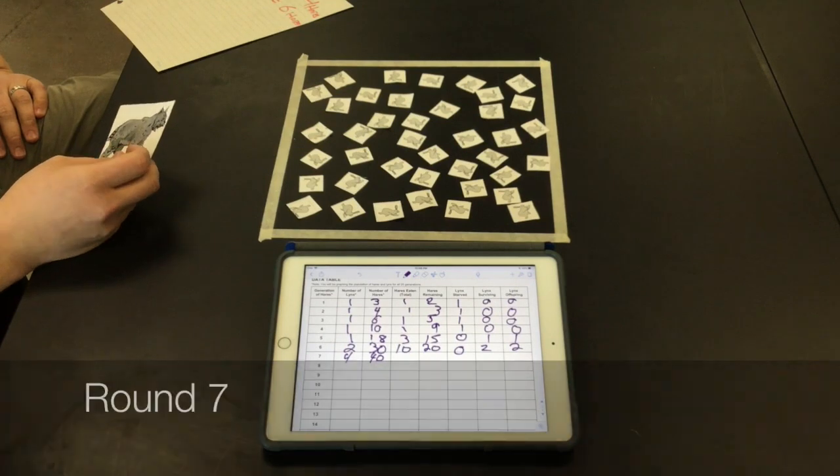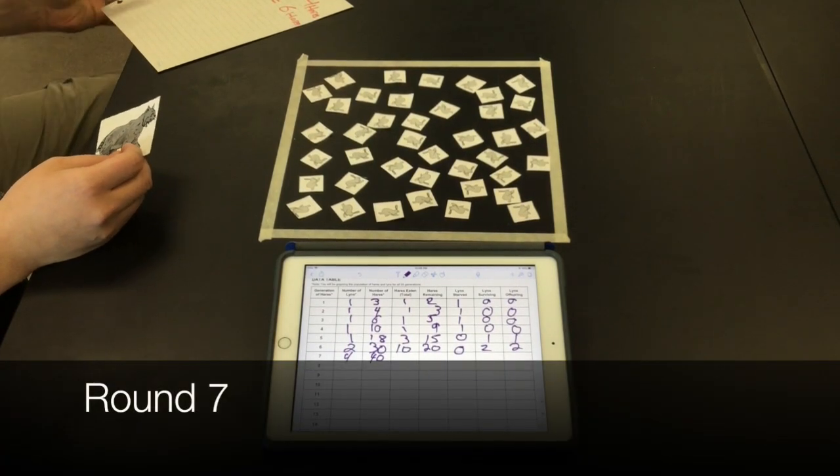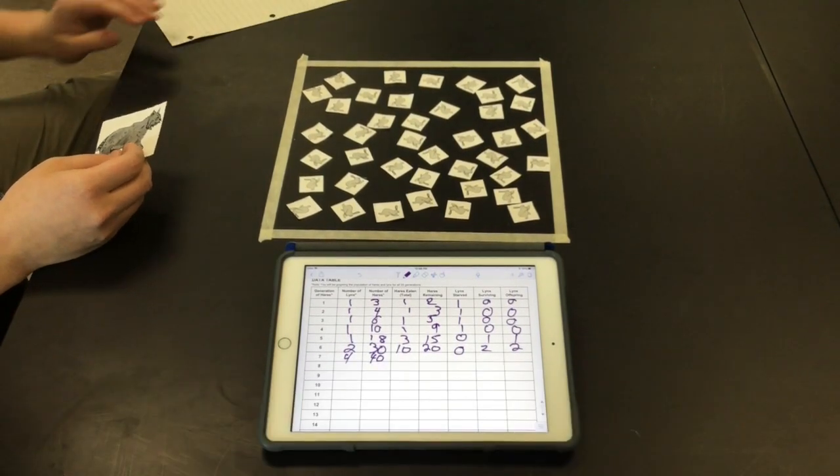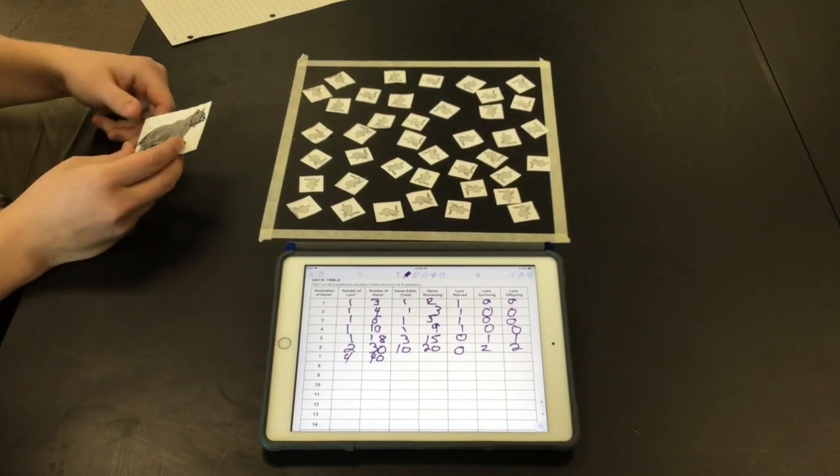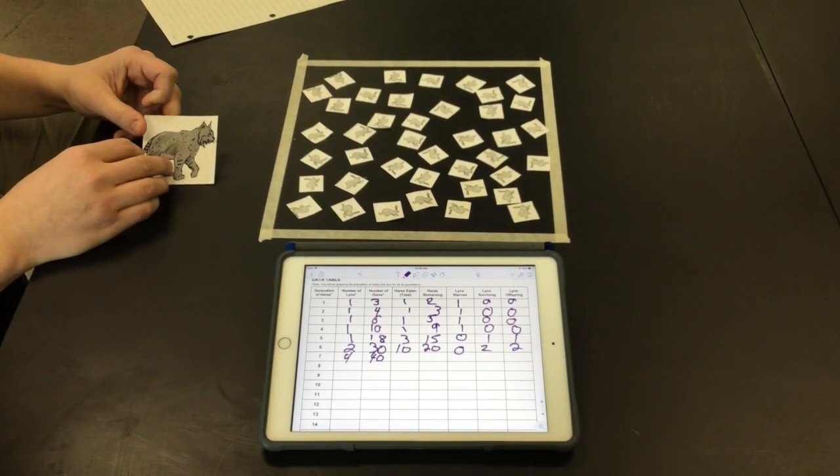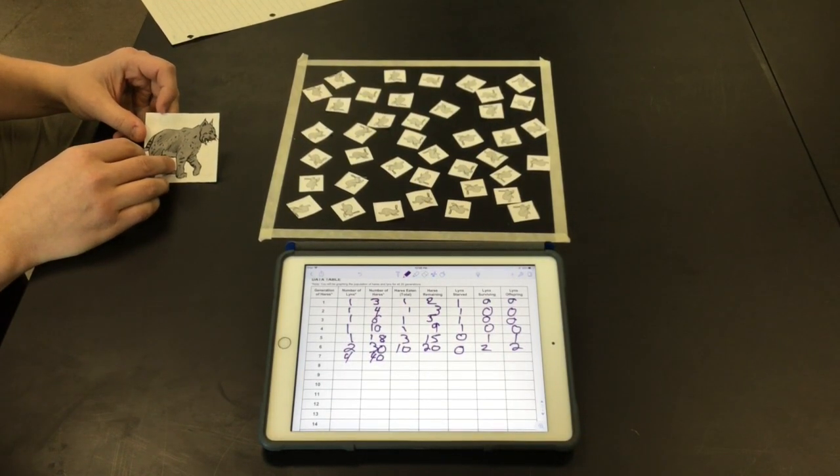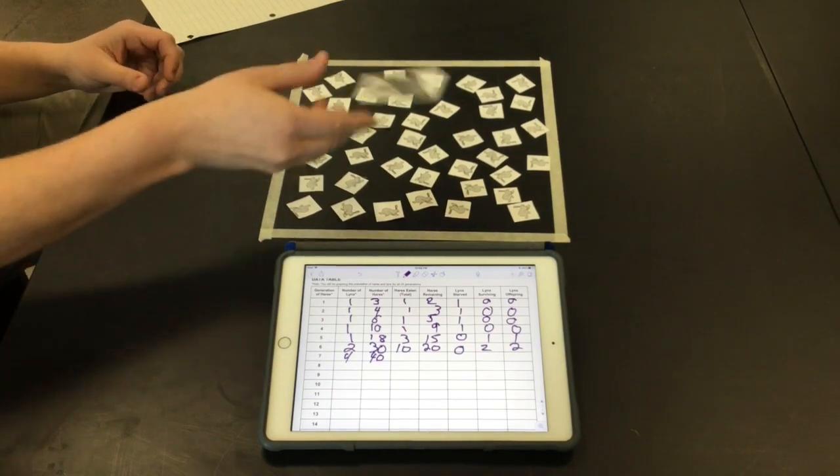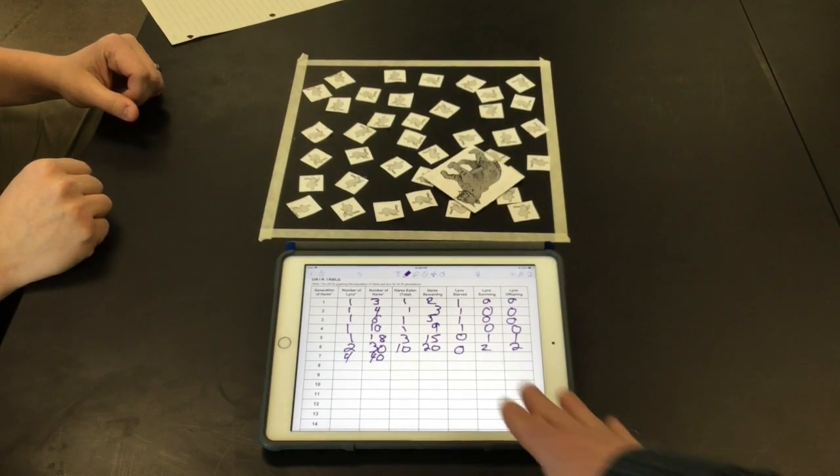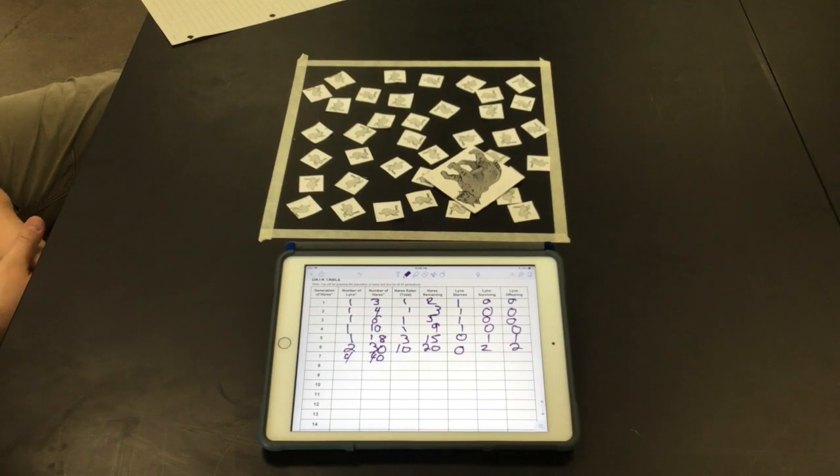All right. So for us in our example, round seven would look like this. This time we have four lynx because we had two last time and then two offspring, so four. And then we have 40 hairs this time because 20 survived after the last round. And we're not going to run through the whole rest of the simulation because by now I think you understand the process, how it works.